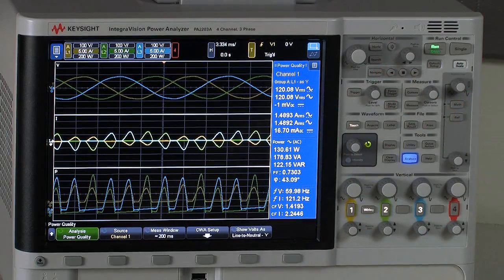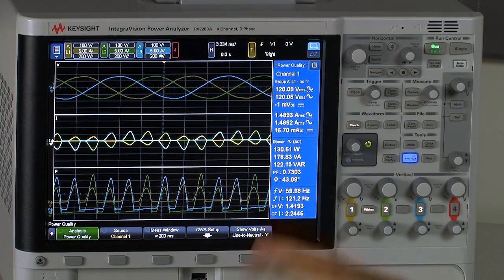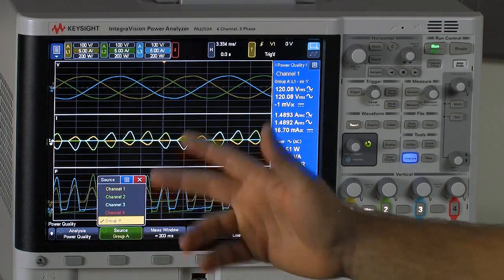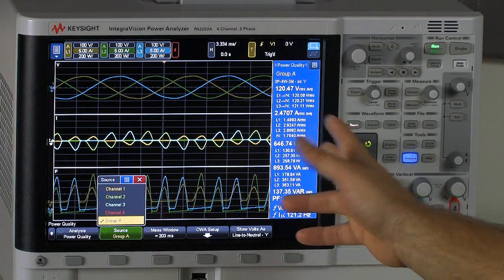So we'll take a quick look here. Now that I've got these group measurements in the power quality analysis mode, I can now, if I go to my source selection here, I can now choose group A, which is again channels one, two, and three.